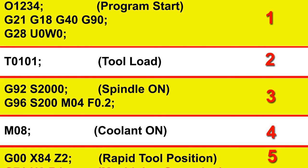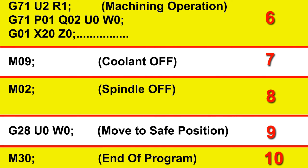These are the steps that every CNC programmer follows: first, program starting; second, load the tool; third, turn the spindle on; fourth, make coolant on; fifth, rapid tool positioning above the part; sixth, do the machining operation; seventh, make coolant off; eighth, turn the spindle off; ninth, move to the safe position; and tenth, end of program.